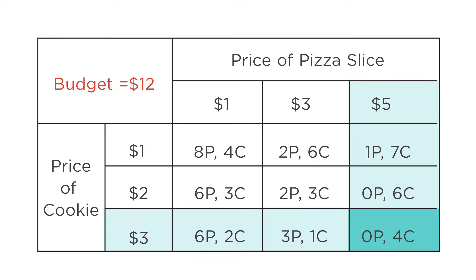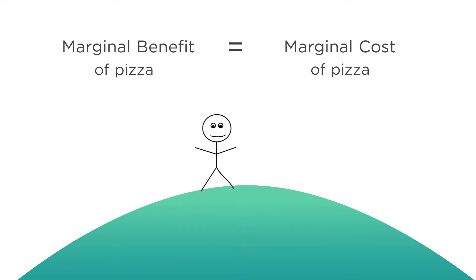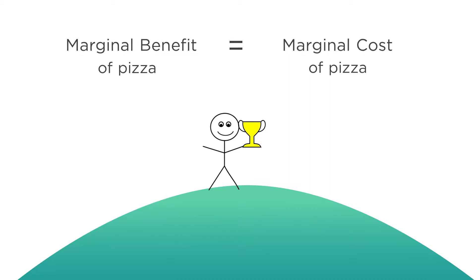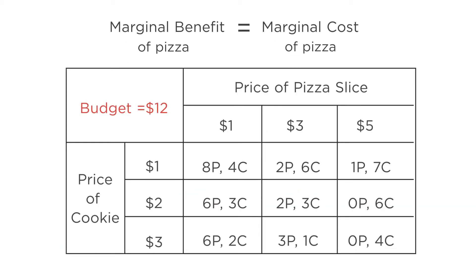Where did the information in this table come from? For each of these combinations of prices, we would have used the utility maximization strategy from last lecture, choosing pizza and cookies such that the marginal benefits equal the marginal costs. Note that as the price of pizza rises, at any fixed price of cookies, you want less pizza.